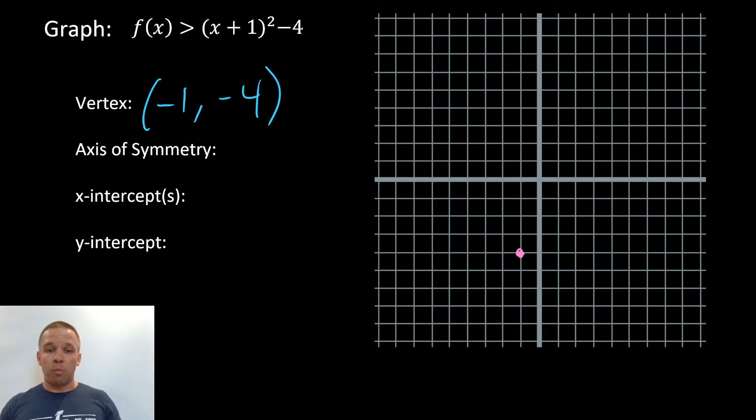All right, now I need to find some other points. Why don't I plug in 0? That's an easy one to work with, right? 0 gets plugged in, I get 1 squared is 1. 1 minus 4 is negative 3.